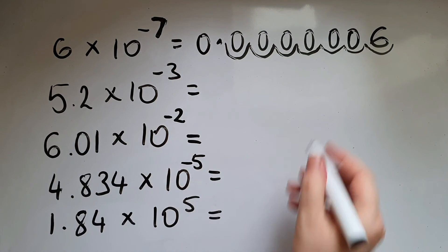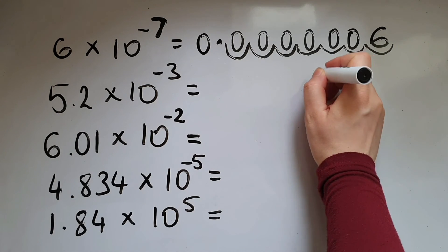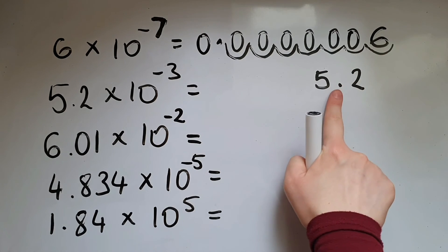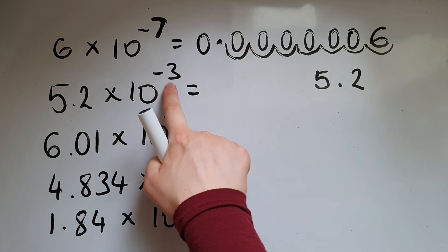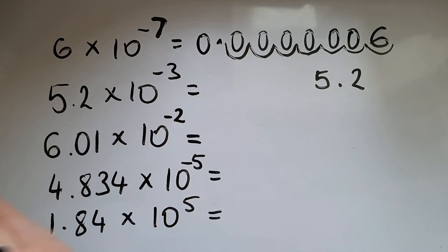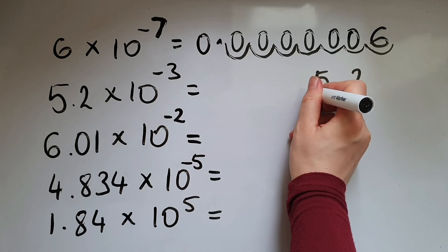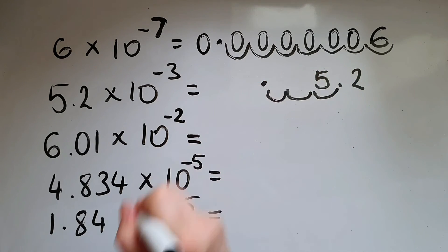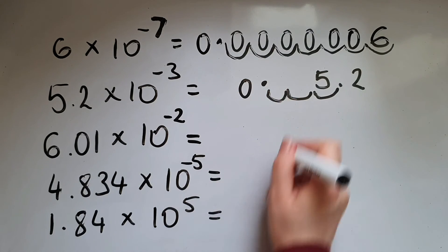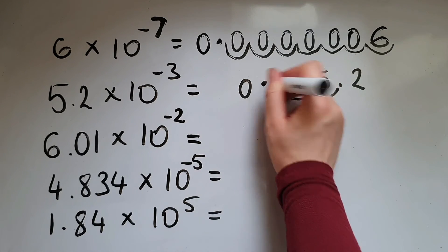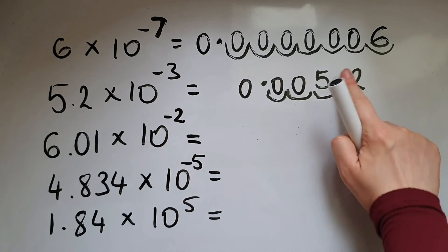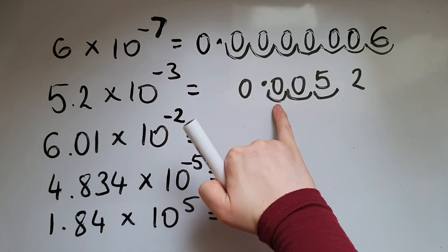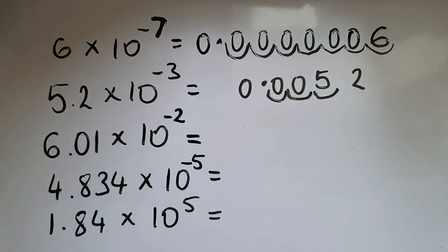Now we've got 5.2 times 10 to the power of negative 3. We move the decimal point three places to the left: 1, 2, 3. That's where the decimal point goes, and we fill those spaces with zeros. So we've got 0.0052.